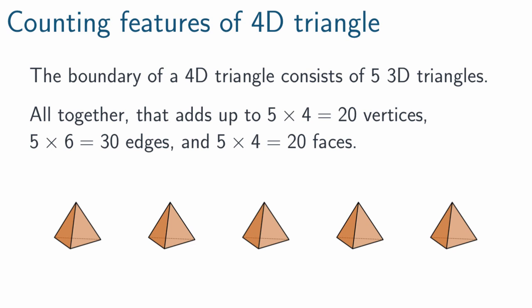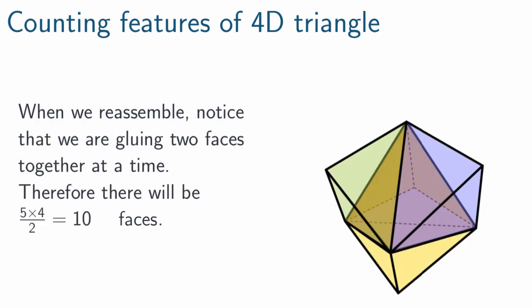But then you have to think about what happens when you reassemble the shape. The easiest one will be faces. Notice that we are gluing together two faces at a time. Always two faces at a time. And so that means you need to take that 5 times 4 and divide it by 2 to get the number of vertices.